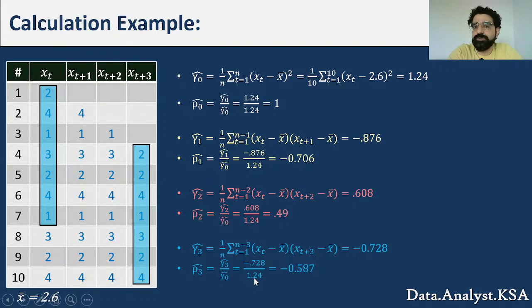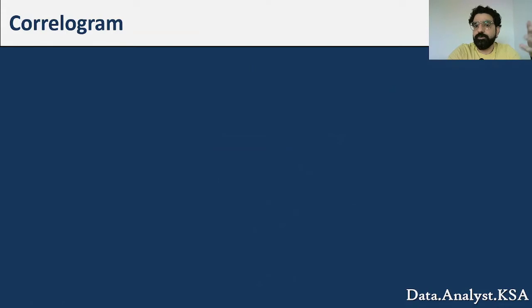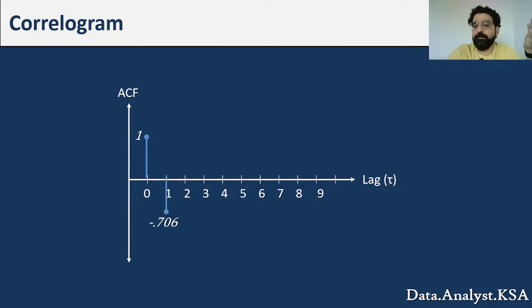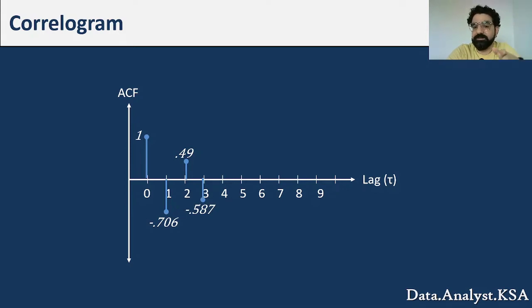These calculated values form the basis of our correlogram. The correlogram plots the autocorrelation function against the lag. At lag 0 the ACF is always 1. Then we plot -0.706 at lag 1, 0.49 at lag 2, and -0.587 at lag 3, continuing for the length of the time series.